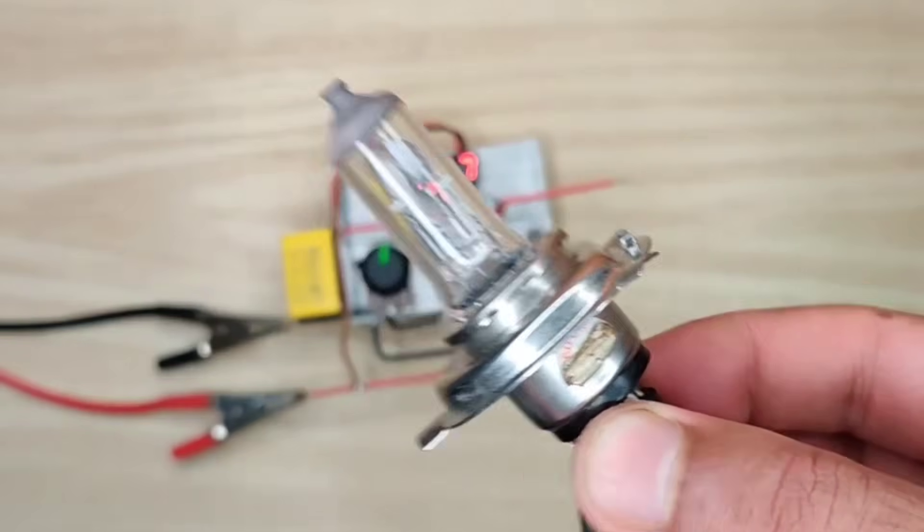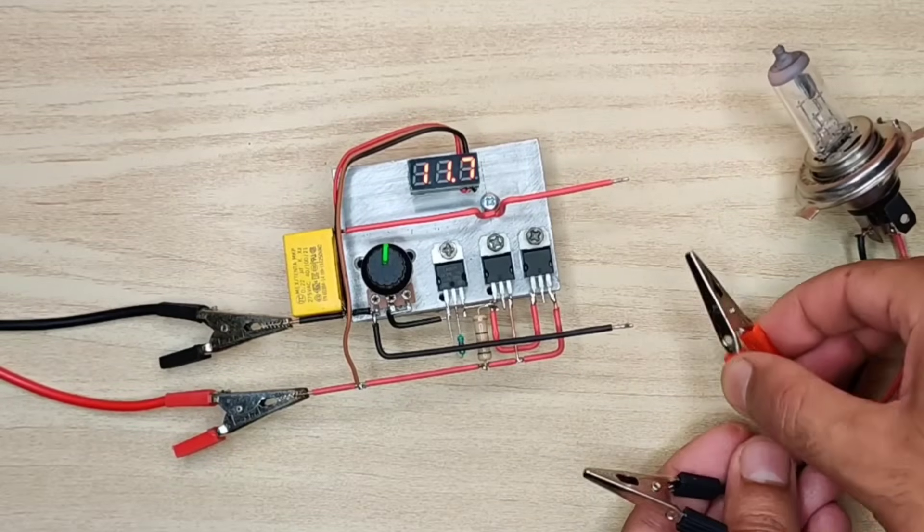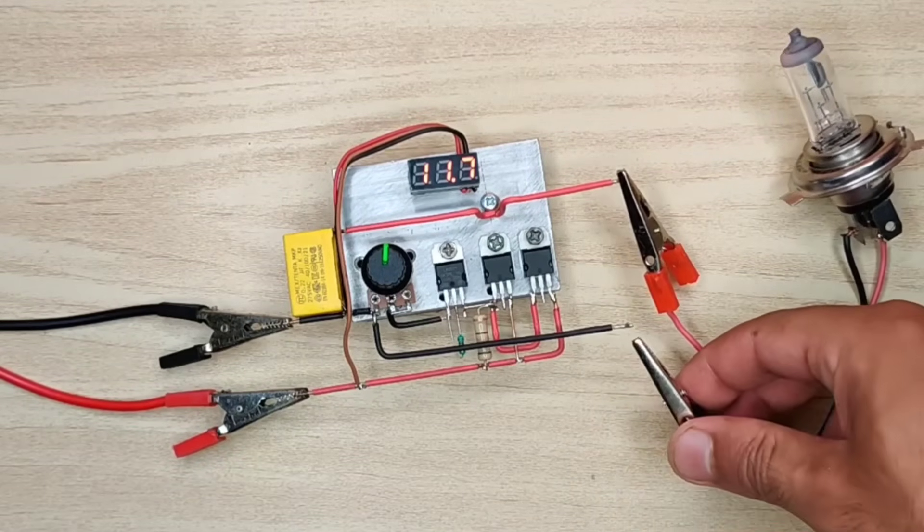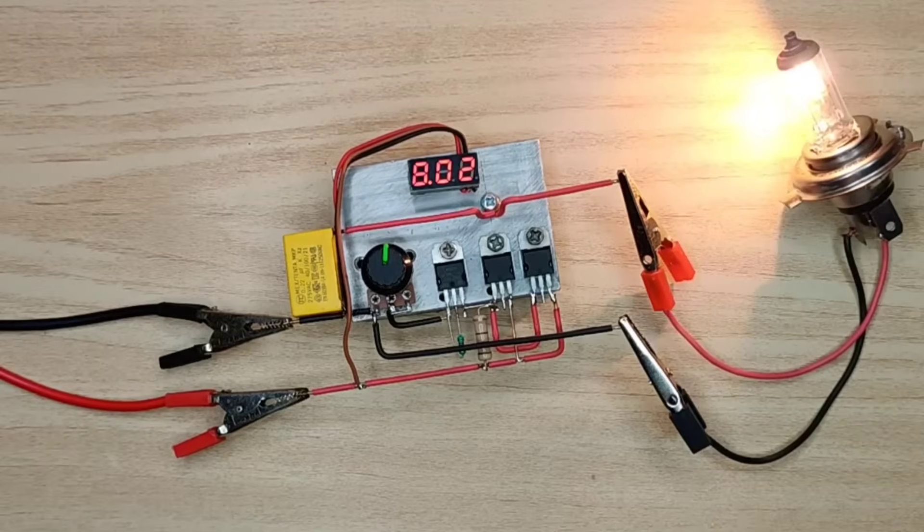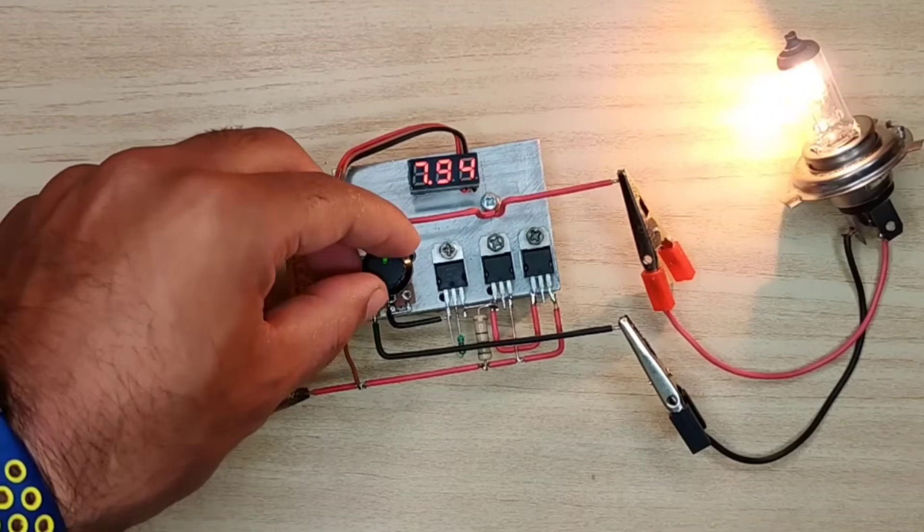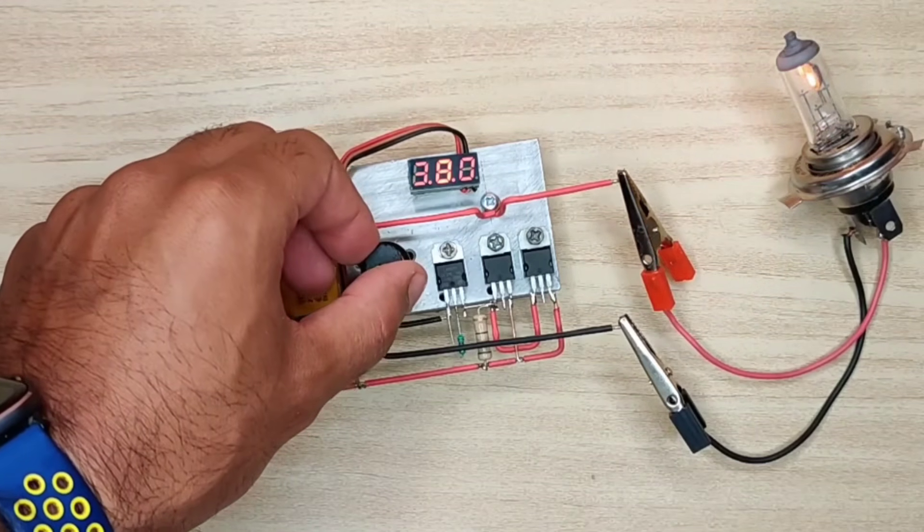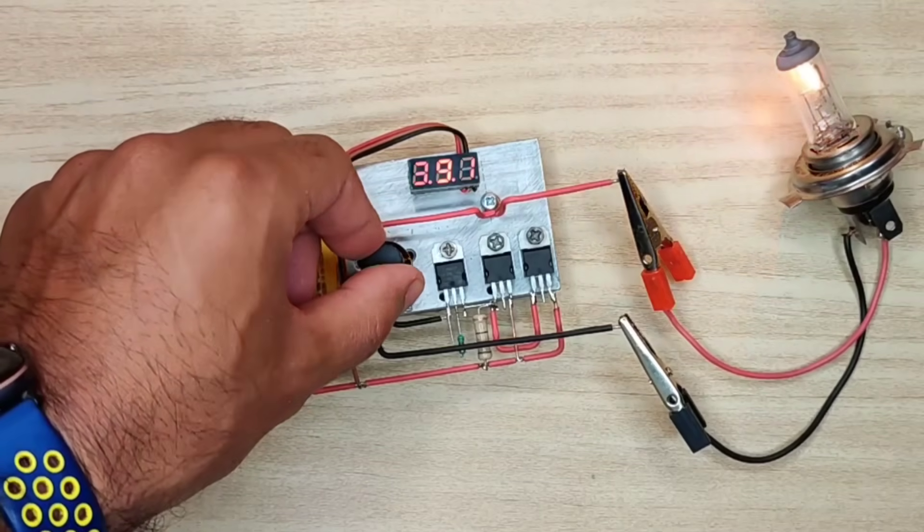Now let's test this 90 watt DC bulb. As you can see it works perfectly but the voltage fluctuates a lot, and also needs a cooling fan for driving higher loads.